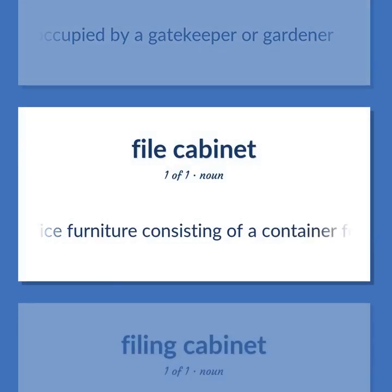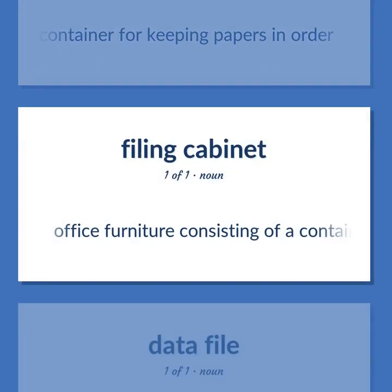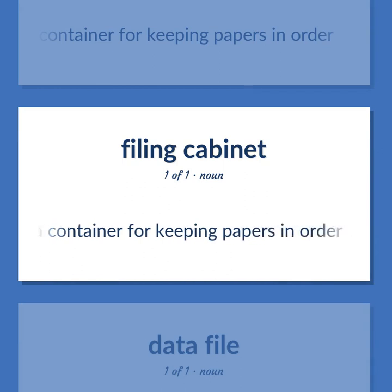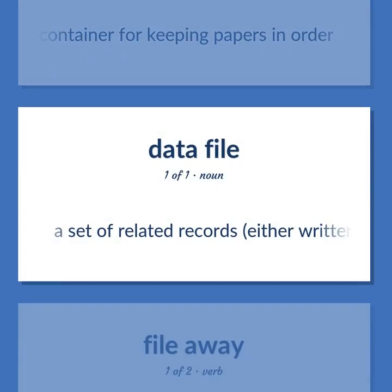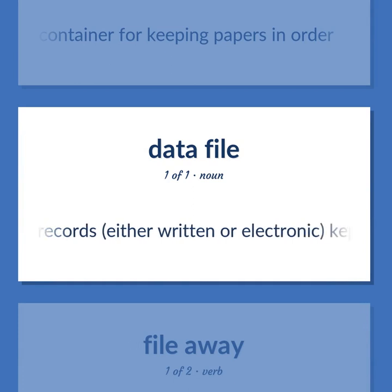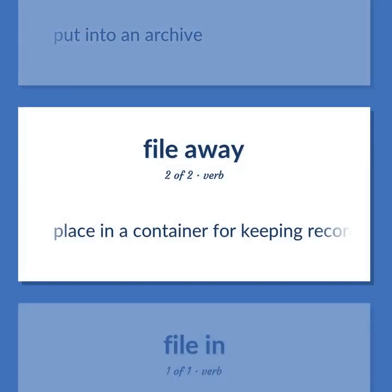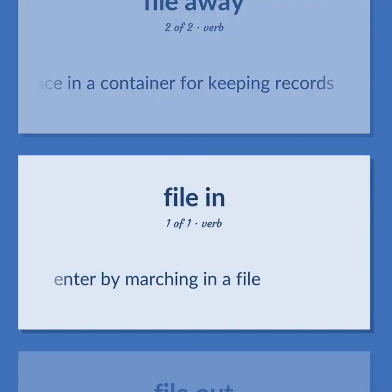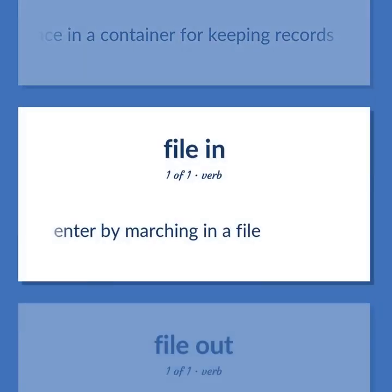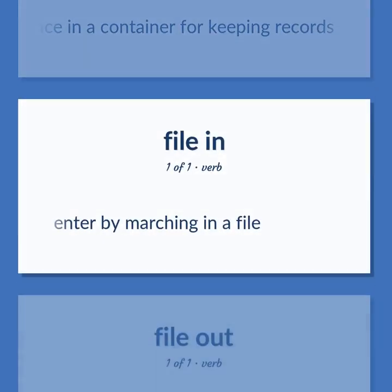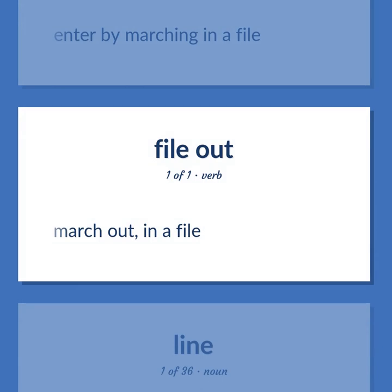File: office furniture consisting of a container for keeping papers in order. A set of related records, either written or electronic, kept together. Put into an archive. Place in a container for keeping records. Enter by marching in a file. March out in a file.